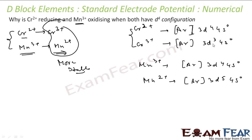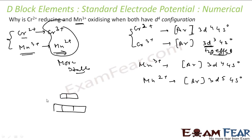Chromium 3+ has a d³ configuration, which is stabilized by the t2g effect — the d orbitals are split, with three lower-energy t2g orbitals and two higher-energy eg orbitals. When the three lower-energy t2g orbitals are filled (d³), the ion is stable. Thus Cr³⁺ is more stable than Cr²⁺. For manganese, Mn²⁺ has a half-filled d⁵ configuration, making it more stable than Mn³⁺ (d⁴). This explains why Cr²⁺ gets oxidized to Cr³⁺ and Mn³⁺ gets reduced to Mn²⁺.